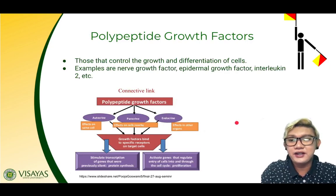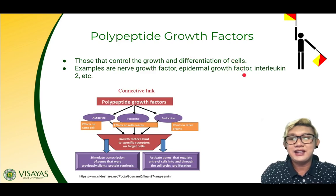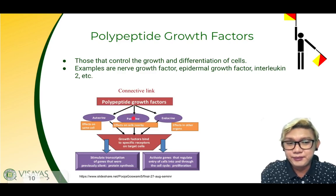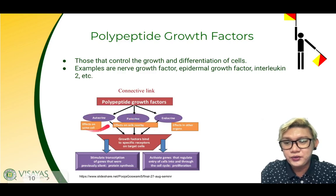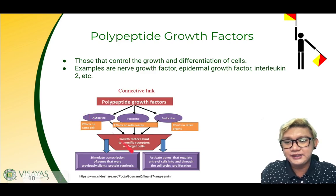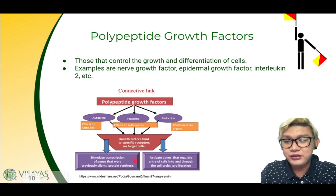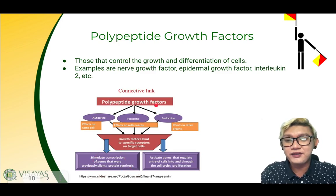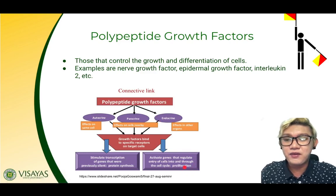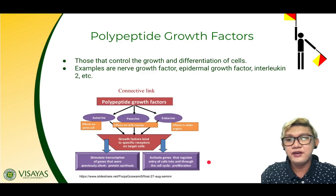Polypeptide growth factors are those that control the growth and differentiation of cells. Examples are nerve growth factor, epidermal growth factor, and interleukin-2. The mode of signaling can be through endocrine, paracrine, or autocrine. Paracrine signaling affects nearby cells, endocrine affects other organs, and autocrine affects the same cells. Other polypeptide growth factors can stimulate transcription of genes that were previously silent — for example, in protein synthesis — and some can activate genes that regulate entry of cells into and through the cell cycle, thereby promoting proliferation.